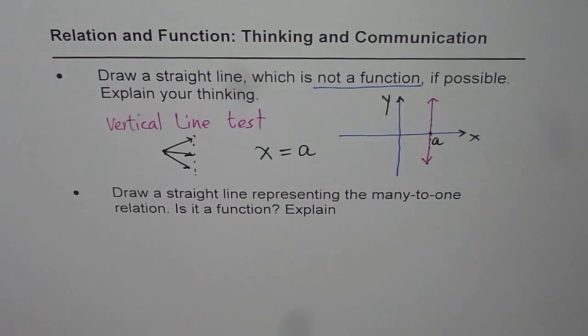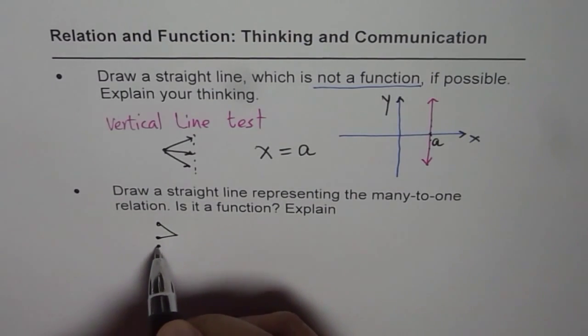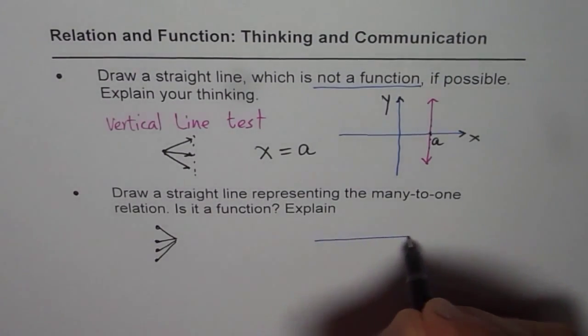Now the second one, we are looking for many-to-one. So we are looking for all different values of x that are just linked with one. This is what we are looking for. So how do you draw this kind of a line?